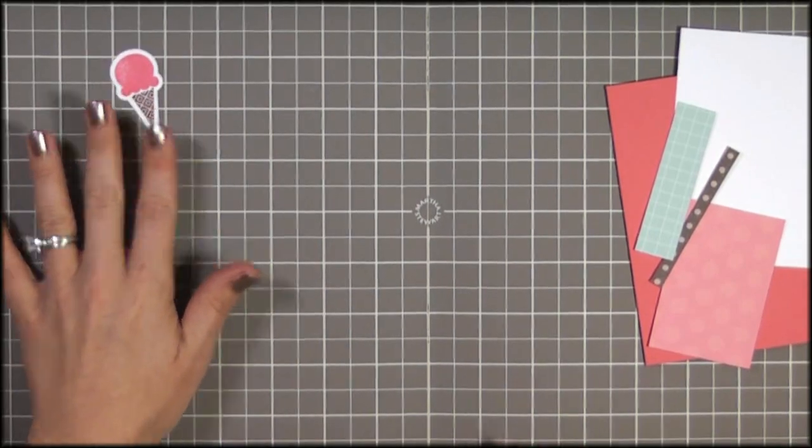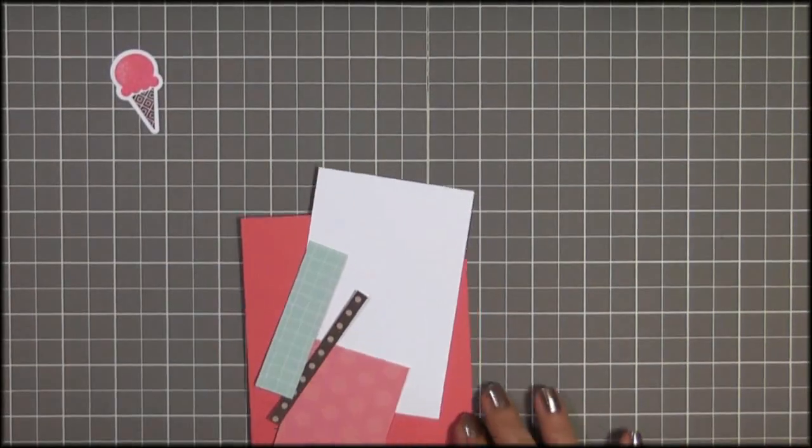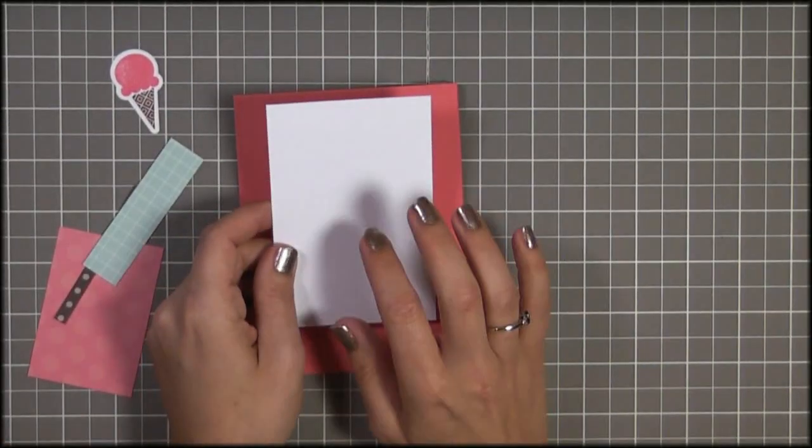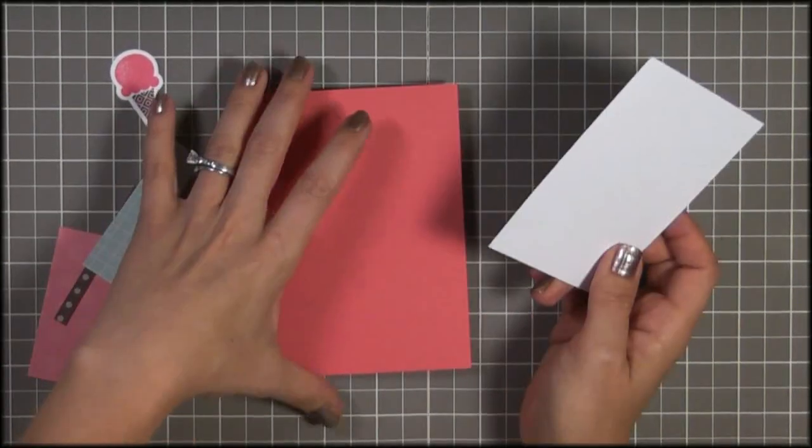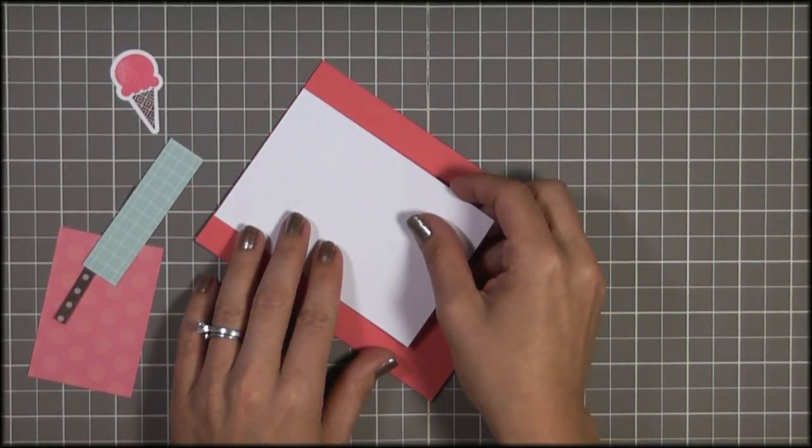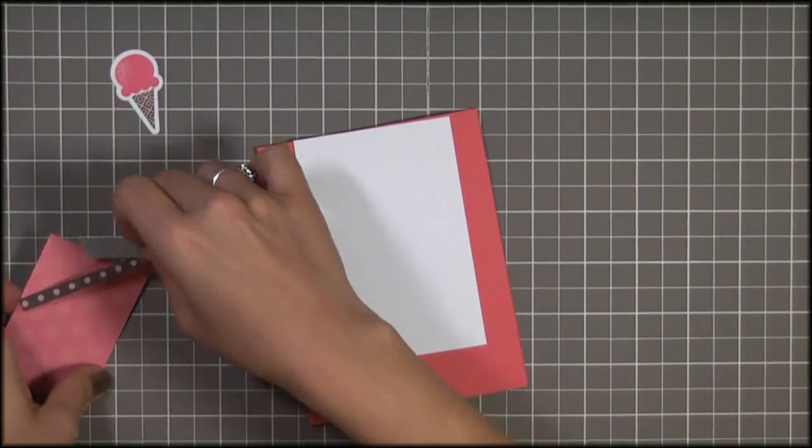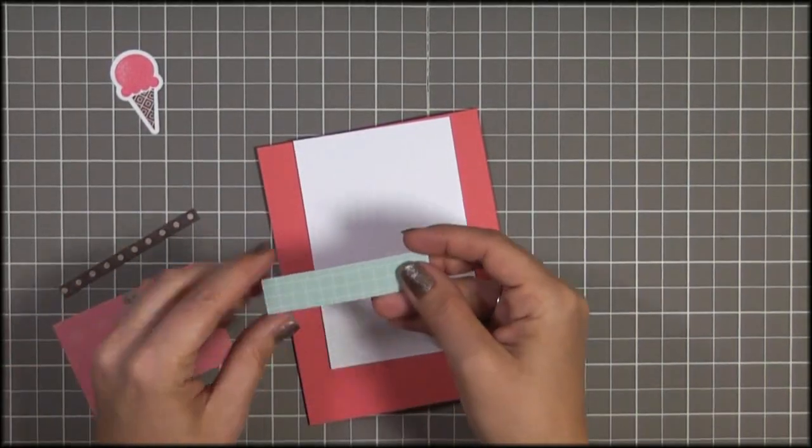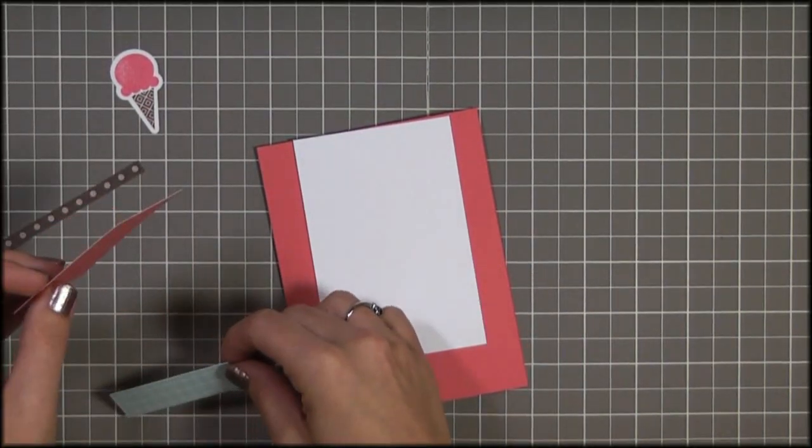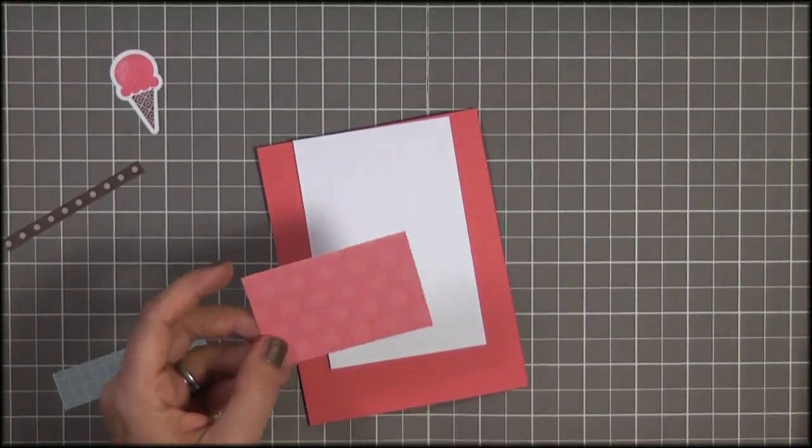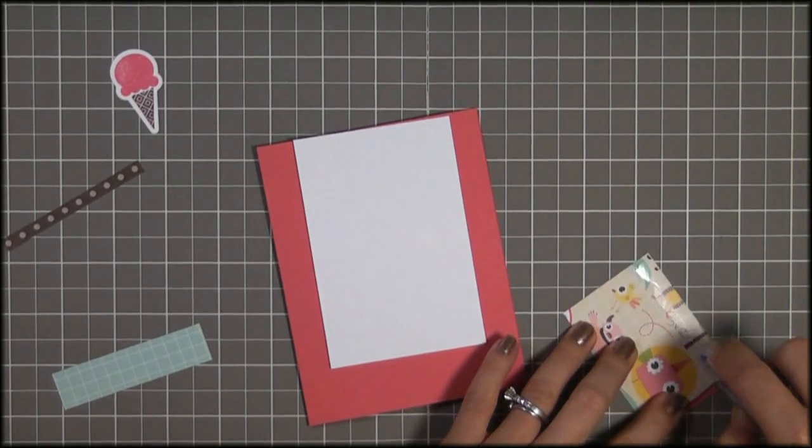So now that I've got that stamped, I'm just going to set it aside and we can start assembling the card base here. So this right here is three by four and a half and it's going to eventually go right here into the center and then I've got each of these little pieces cut out. So this one's going to go down first and it is three by two inches. Let's put some adhesive on this.